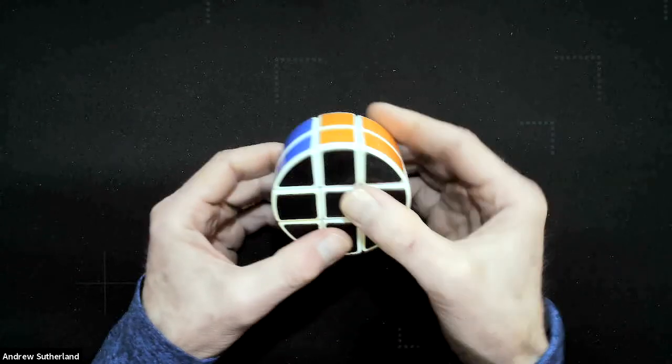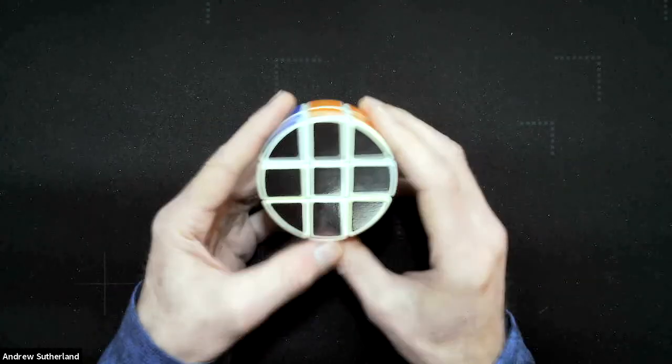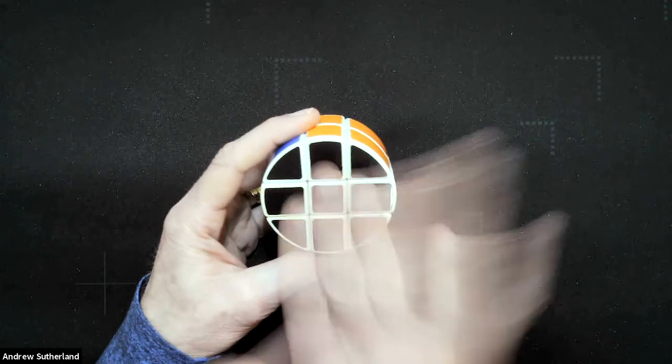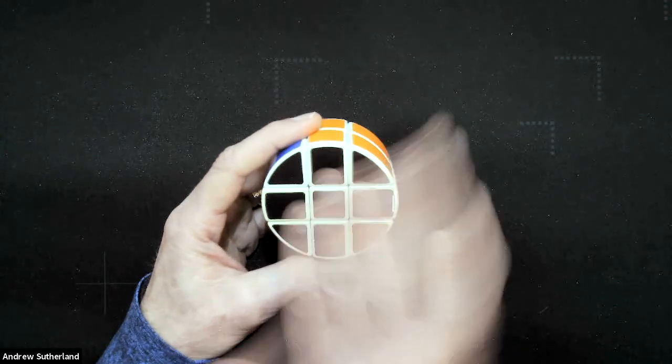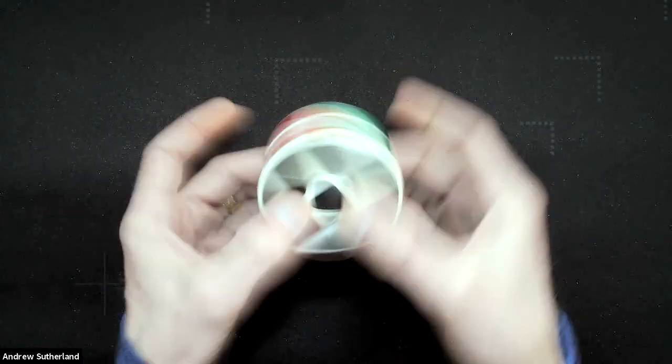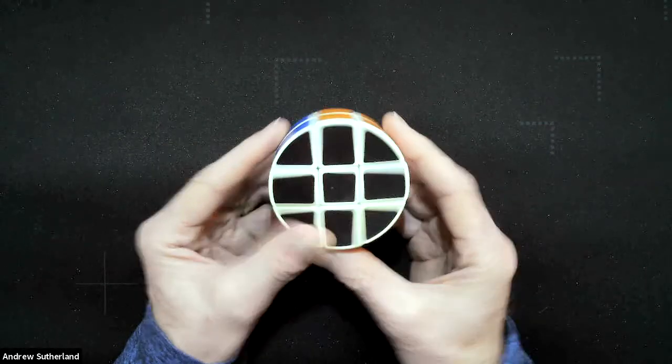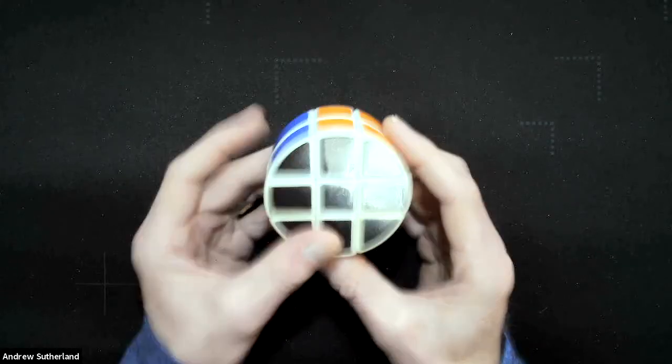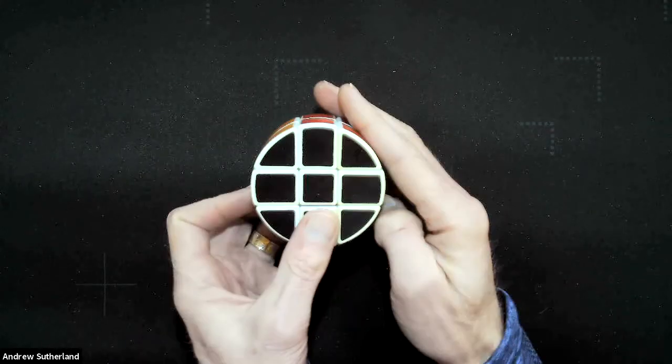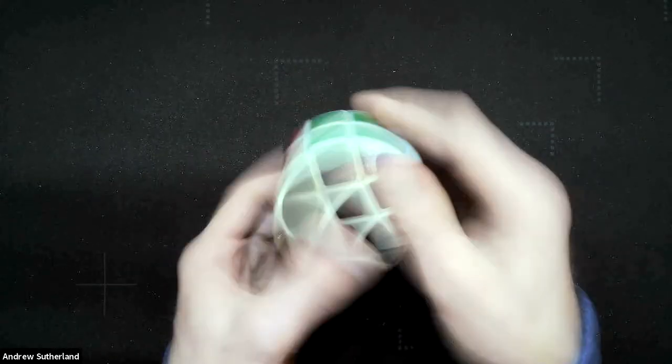And actually, since we're not going to distinguish between... we're going to assume that this face, what's white in the problem set and black here, is always facing us, but there's still four different rotations it could be in. And it doesn't matter which of those four rotations or positions you return it to. We'll say it's solved if you wind up like this, or like this, or like this, or like this.